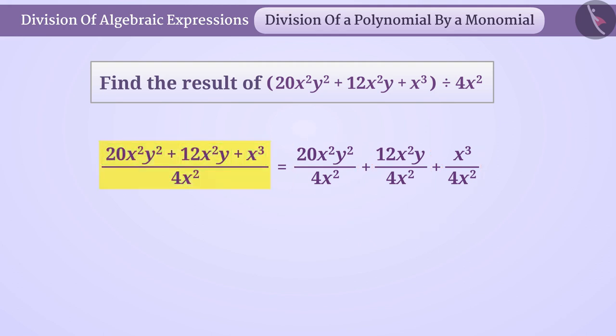Here we will write it term by term. In 20x squared y squared divided by 4x squared, when 20 is divided by 4 the result is 5. Similarly, you can cancel x squared in both numerator and denominator. In this way we get 5y squared from the first term.